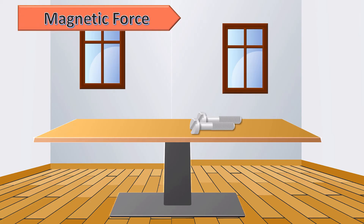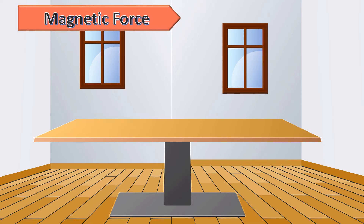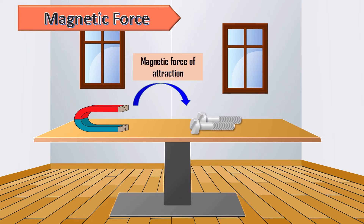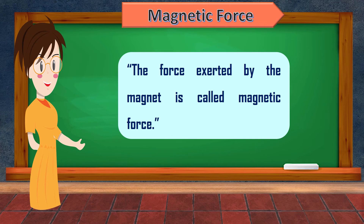Riya is playing with a magnet. After playing, she kept the magnet on the table. She noticed that the magnet on the table is attracting iron nails. Why does this happen, or which force is the magnet exerting on the iron nails? When the magnet attracts the iron nail, it exerts force on the nails. As a result, the nails are attracted by the magnet through magnetic force. So, the magnetic force can be defined as: the force exerted by a magnet is called magnetic force.